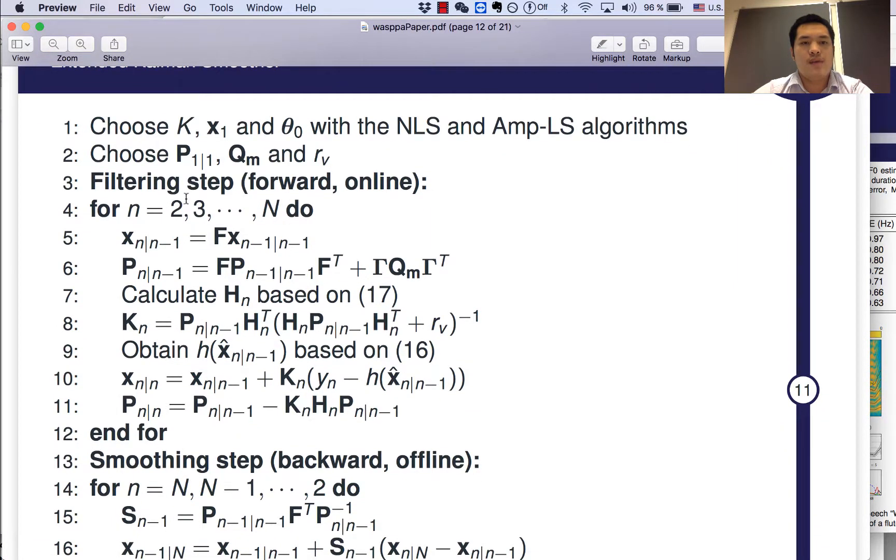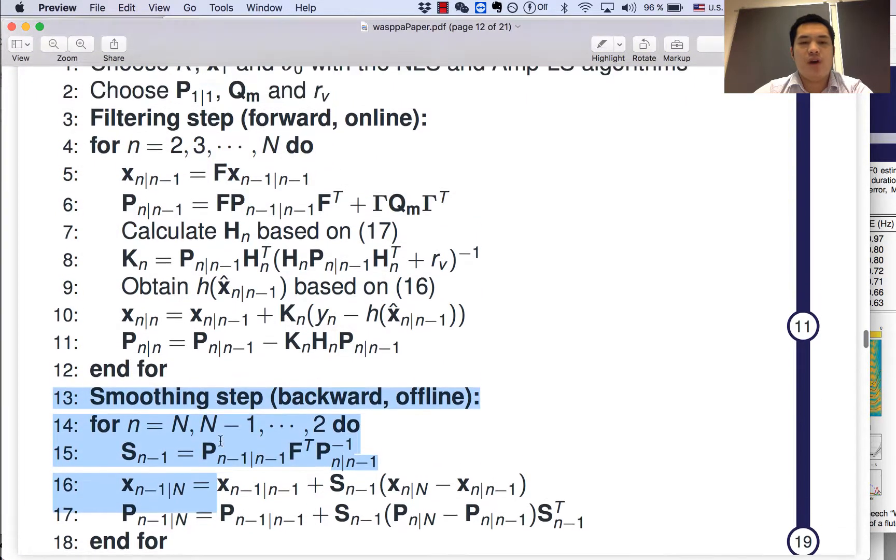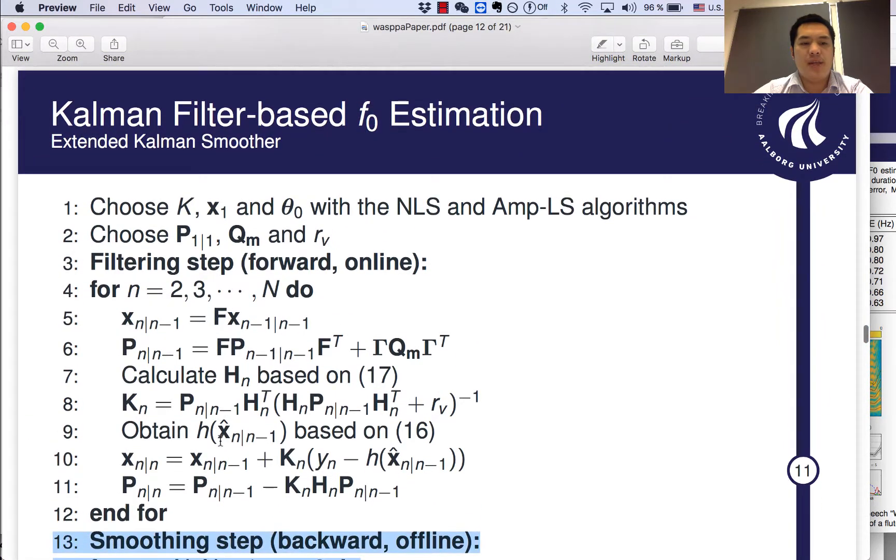So, we have both the forward step and backward step. The backward step is for offline implementation. The forward step is for online implementation.